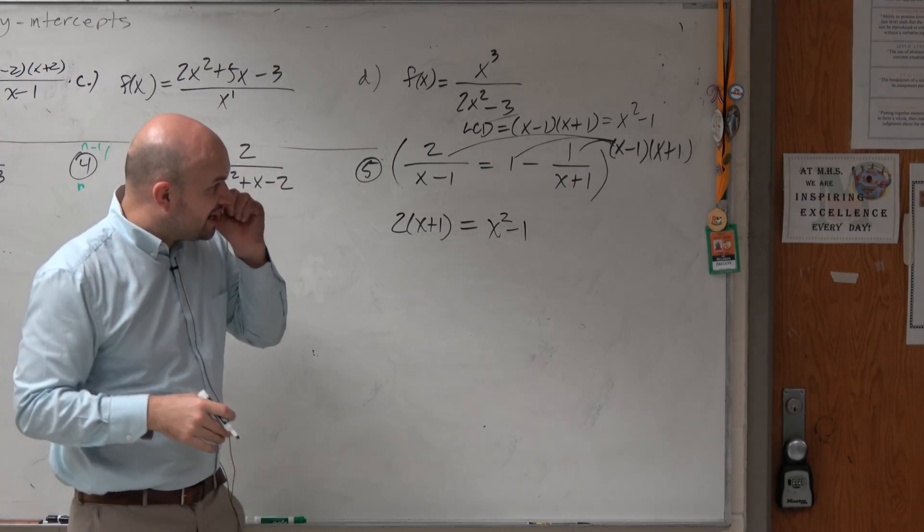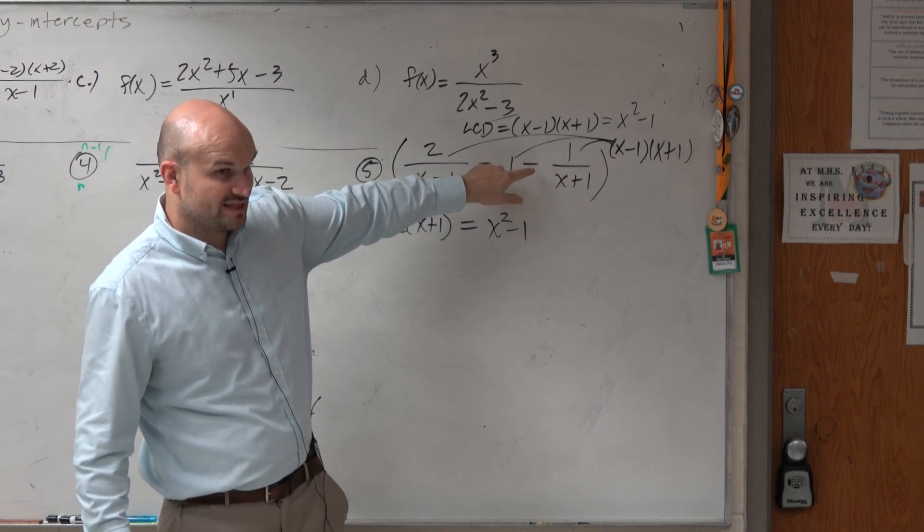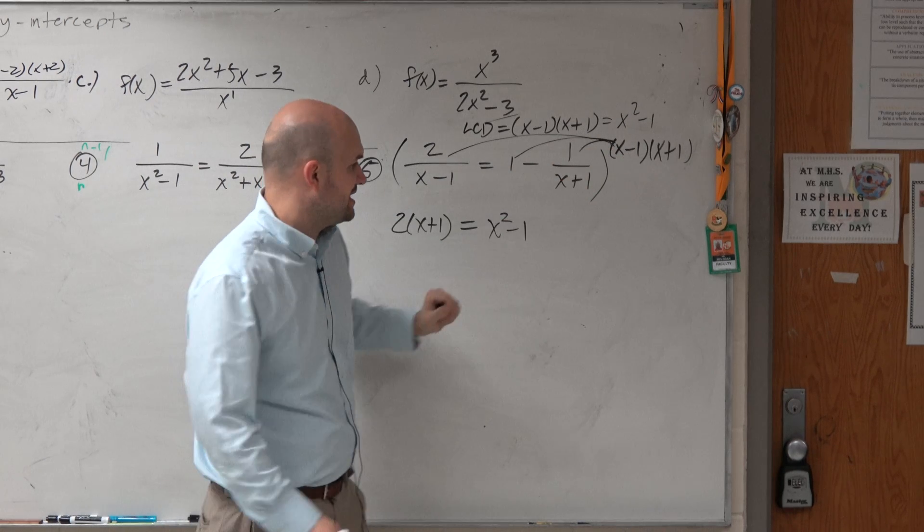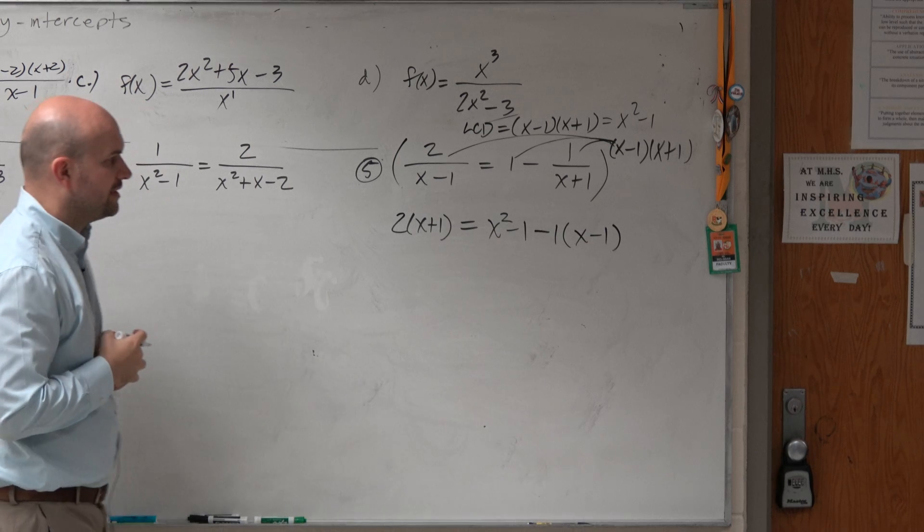And then here, when I multiply this times this, you guys can see the x plus 1's divide out. So be careful with this negative. That's a negative 1 times x minus 1.